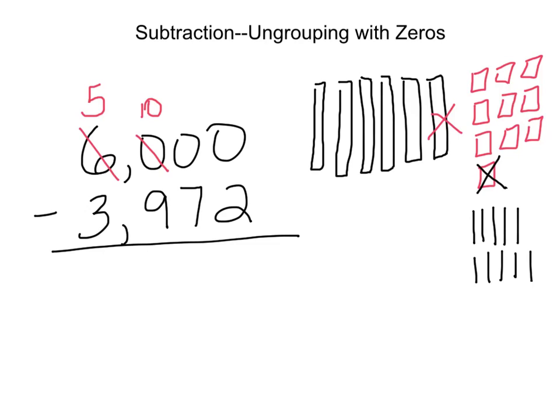So what did we do there? We ungrouped a hundred out of the hundreds place, leaving us with nine hundreds, and we regrouped it in the tens place, leaving us with ten tens, just like we see in the proof drawing.